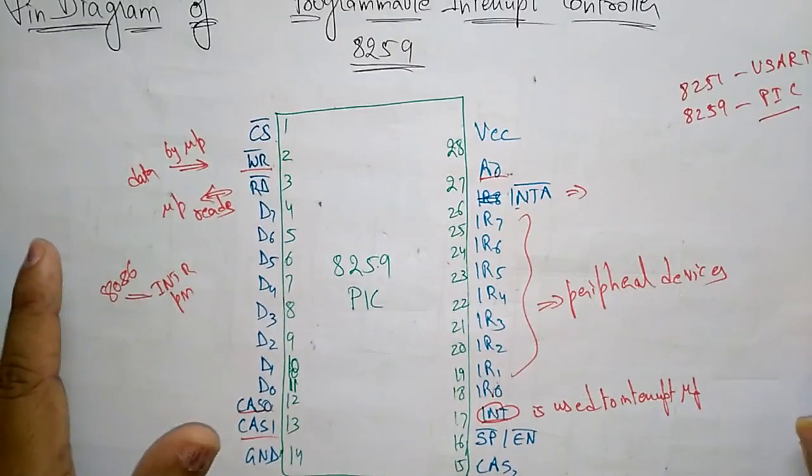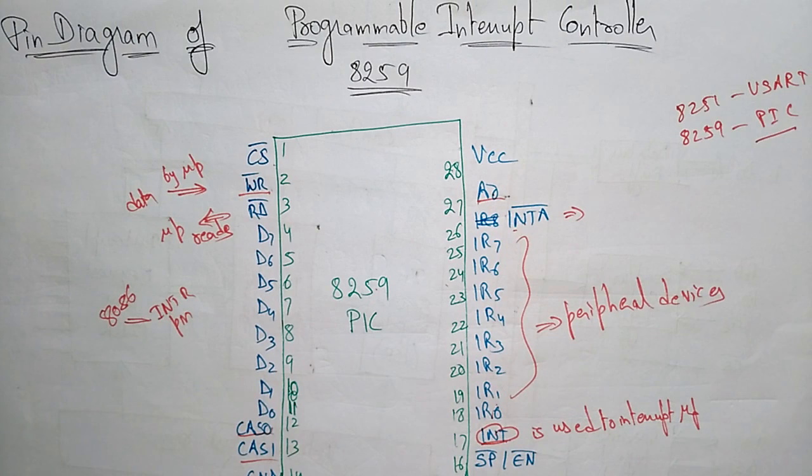So this is about the pin diagram of 8259 programmable interrupt controller. Thank you.